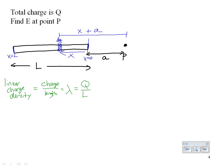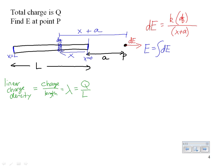We break this up into pieces dq, then write down the electric field due to one piece: dE = k dq / (x + a)². The total electric field adds up all the individual dE pieces, so E = ∫ k dq / (x + a)². Note that the denominator should be squared.